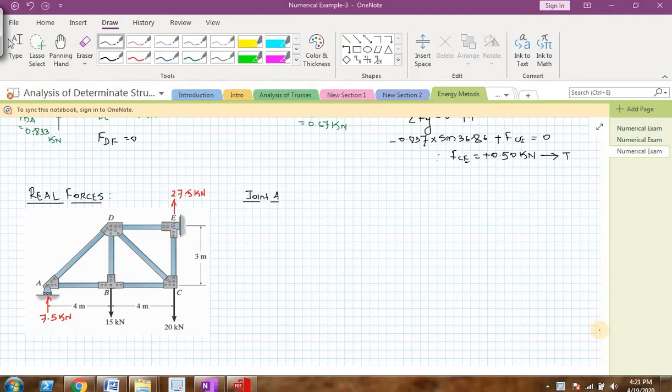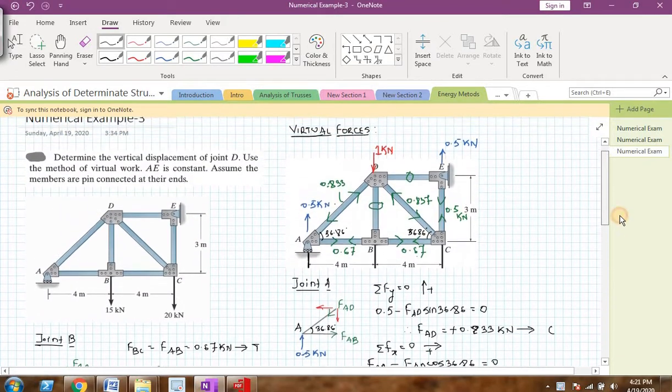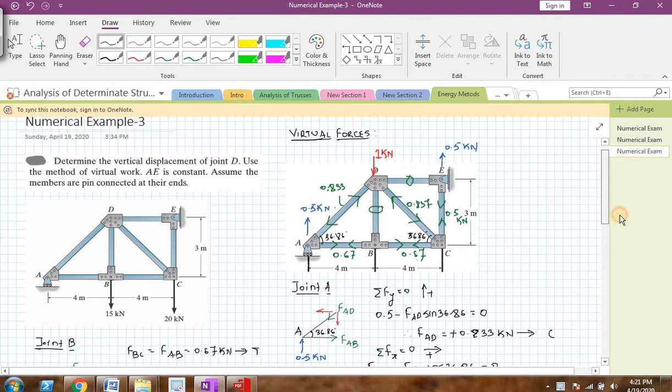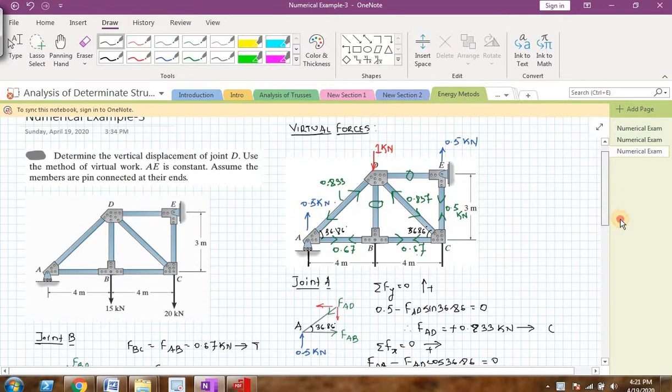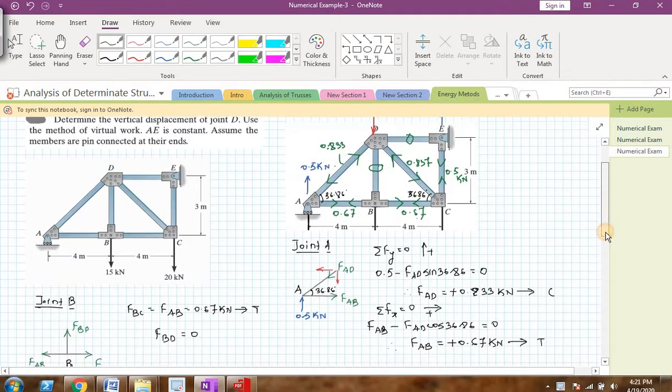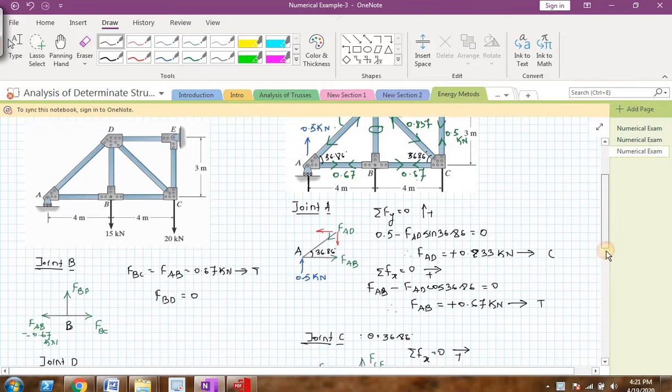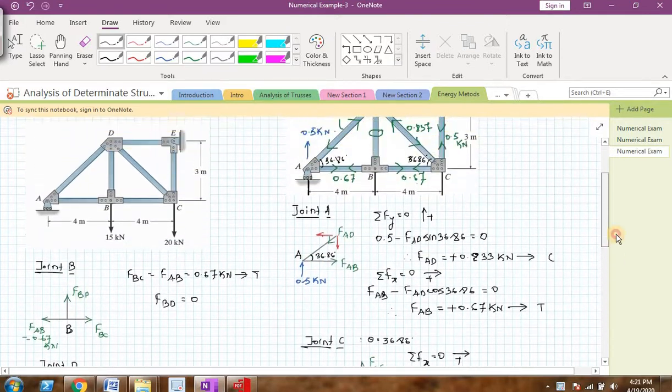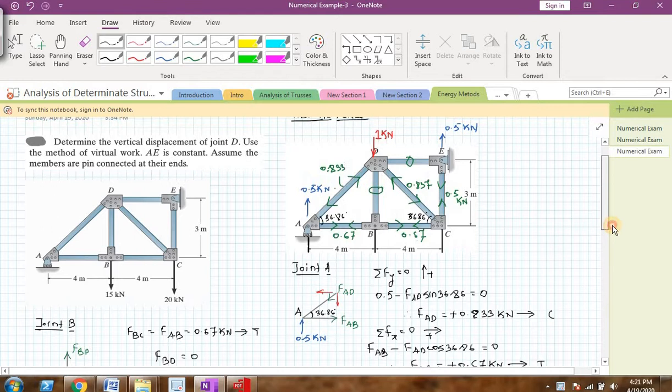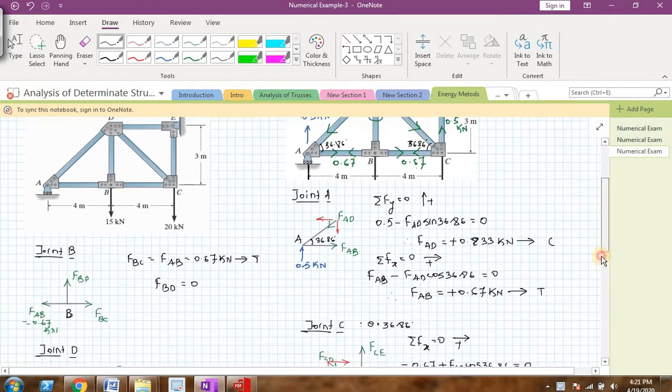In the previous video, we were analyzing this truss to find vertical deflection at D. At point D, I had applied 1 kN of force without any external forces of 15 and 20 kN. I analyzed this truss by method of joints and tried to find the force in each and every member of the truss, calling these forces as virtual forces. If you are directly viewing this video, please go back and check my part 1 video.